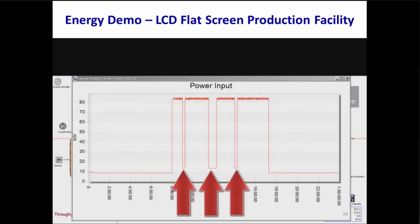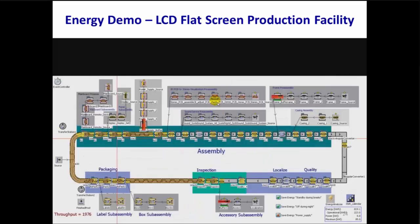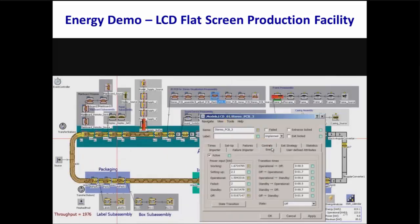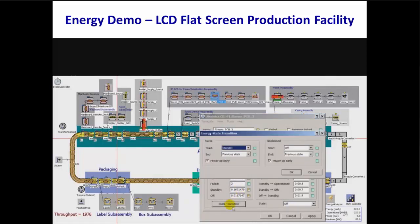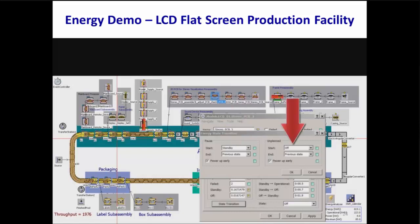During breaks, instead of consuming approximately 77 kW, our equipment is consuming about 14 kW. The secret behind modeling these energy saving measures is the state transitions button on the energy tab for station and conveyor objects. The left side tells Plant Sim what to do at the start and end of a pause or break within a shift — here, standby is specified. The right side tells Plant Sim what to do at the start and end of unplanned or off-shift time between shifts — here, off state is specified.